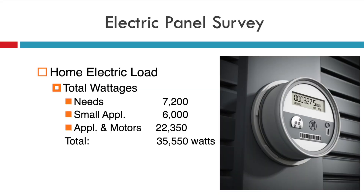Keep in mind, this does not include the wattage of your HVAC system. Then in the next step, we add those three subtotals together. In this example, the total wattages needed for the electrical load in my house is 35,550 watts without including the HVAC system.